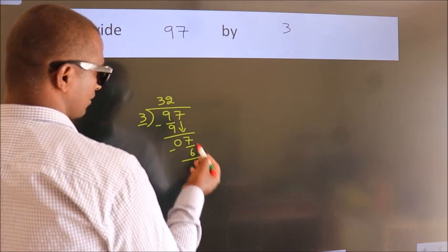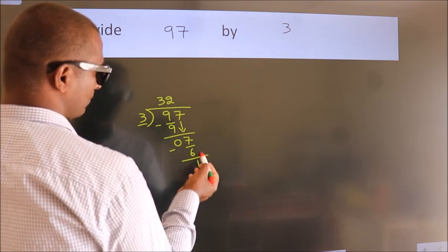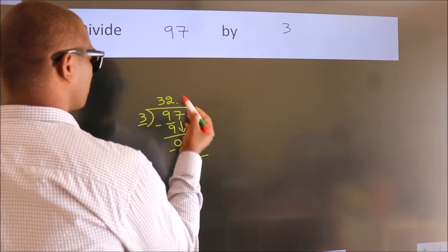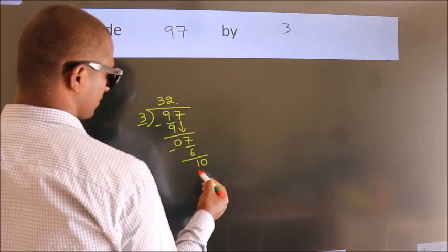After this, no more numbers to bring down. So what we do is, we put a dot and take 0. So 10.